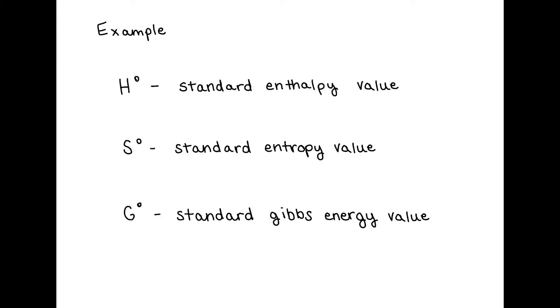Here are some examples of the notation used to describe measurements taken at the standard state of a substance. See how the H has a knot symbol behind it. This describes the standard enthalpy value, which was taken at the standard state of the substance.